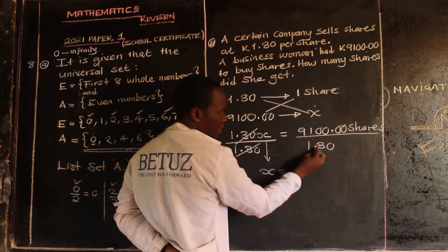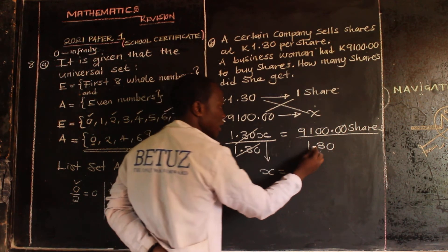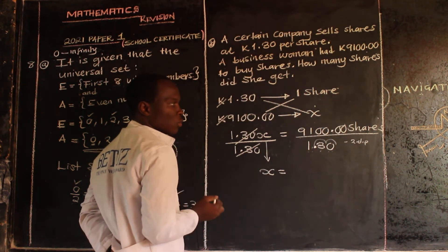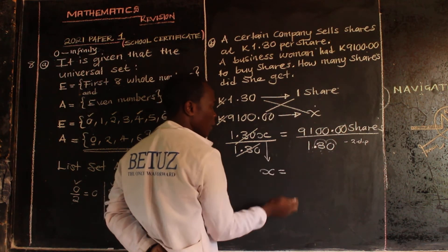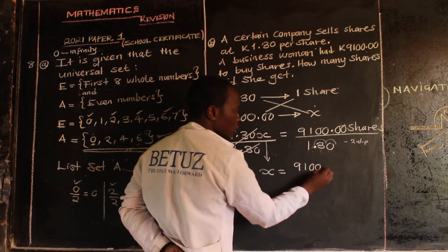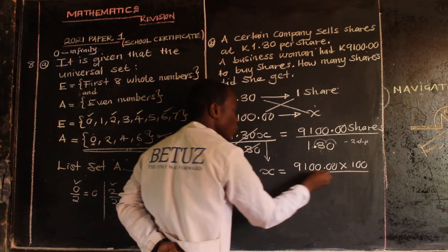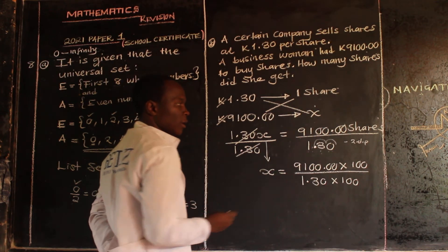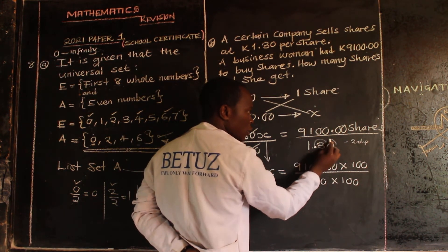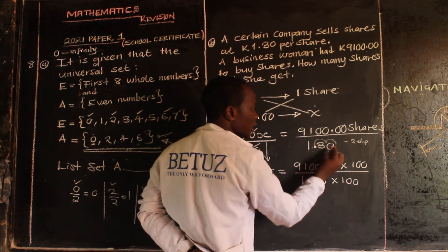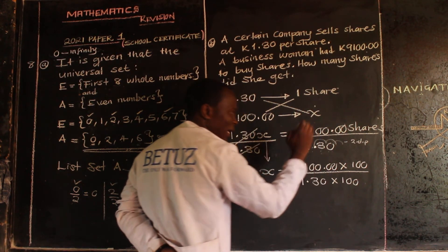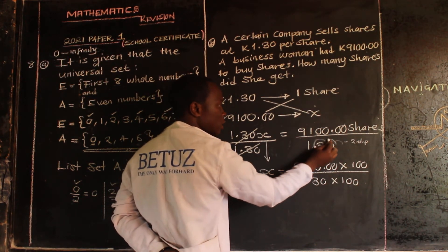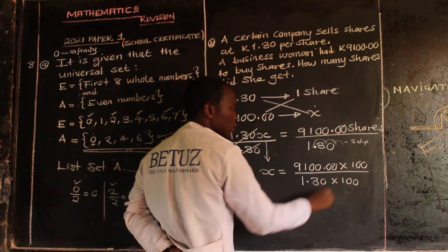We have two decimal places in 1.30, so we multiply both the numerator and denominator by 100 to eliminate the decimal. If we had three decimal places we'd multiply by 1,000; one decimal place by 10. Since we have two decimal places, we multiply by 100.